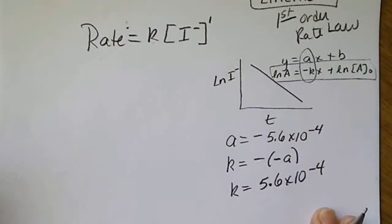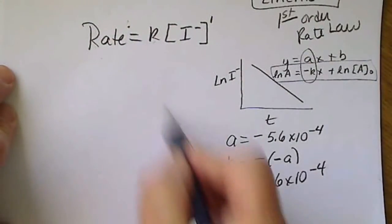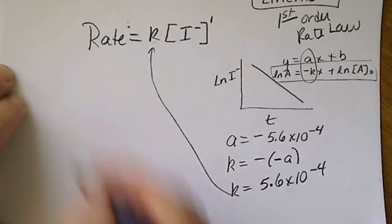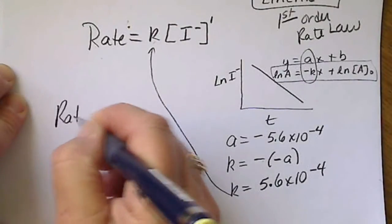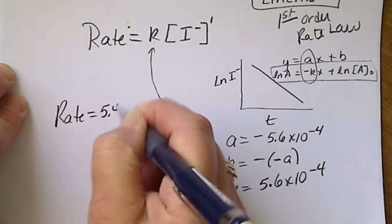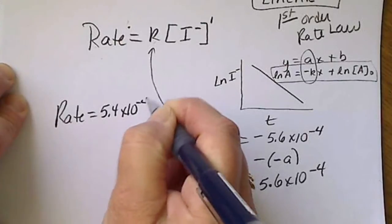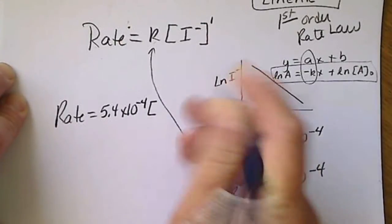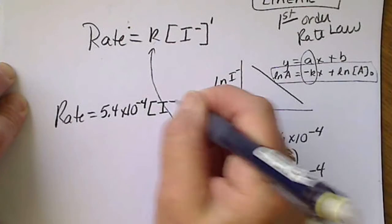So when you actually write the rate law, I'm going to substitute that into the value. So our rate law rate equals 5.4 times 10 to the minus 4 times [I-].